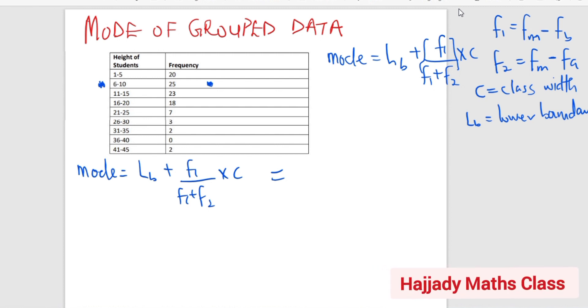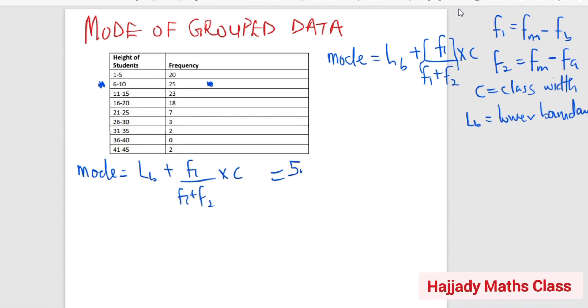And for us to determine our lower boundary, we know that our lower limit here is 6. So you are going to subtract 0.5 from this lower limit 6. So our lower boundary is going to give us 5.5. In my previous video for the median, I decided to use the lower limit directly because you can also do that. But in this case, I'm going to use the lower boundary by subtracting 0.5 from the lower limit plus F1.